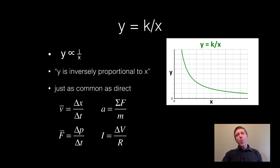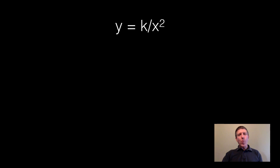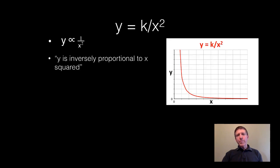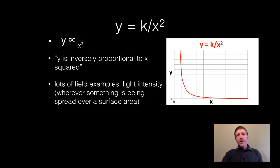Another common relationship, y equals k over x squared. You can say y is inversely proportional to x squared, or you could say y is directly proportional to 1 over x squared. There are a lot of examples in this, especially in fields and light intensity. Whenever you have something that's being spread out over a surface area, like light that's spread out over a sphere, for example.